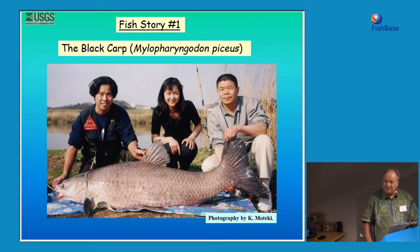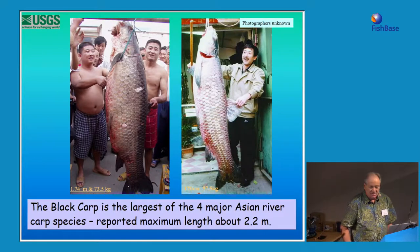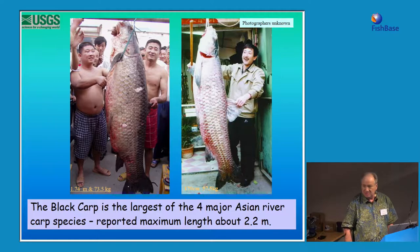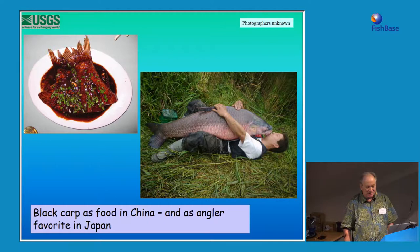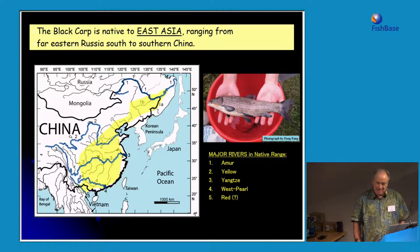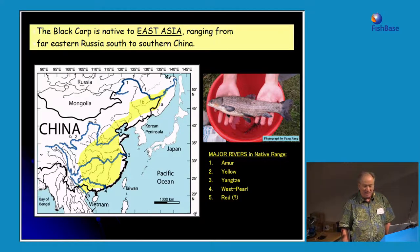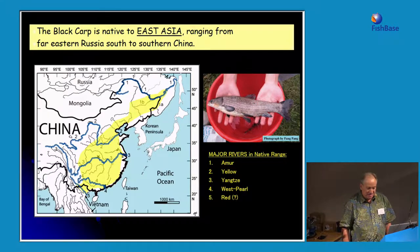The black carp, Mylopharyngodon piceus, is an Asian member of the family Cyprinidae — the largest of the so-called Asian carps, known to reach two meters or more in total length. In parts of China it is a food fish and considered a delicacy; some Japanese anglers love it as a sport fish. The black carp is native to East Asia, ranging from southern China and possibly northern Vietnam north to far eastern Russia, occurring in subtropical to tropical rivers, especially common historically in the Yangtze and Pearl River basins.